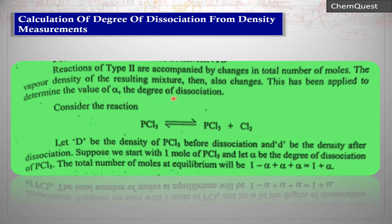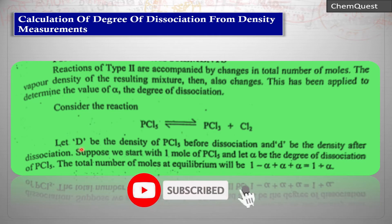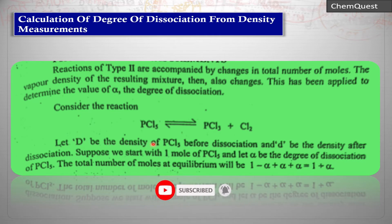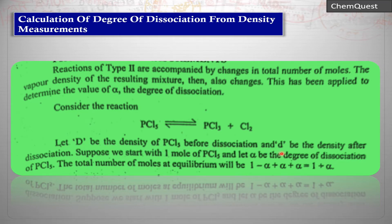For this reaction, capital D is the vapor density of PCl₅ before dissociation, and small d is the vapor density after dissociation. These are the two key density values we will use.